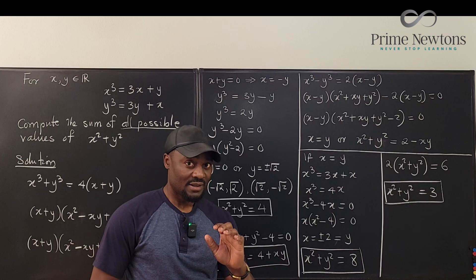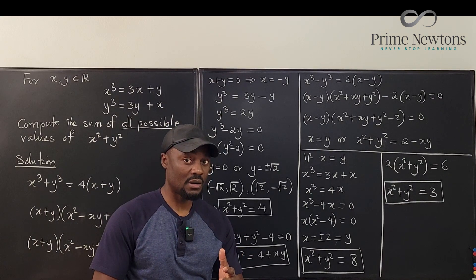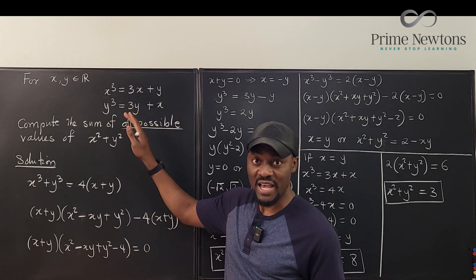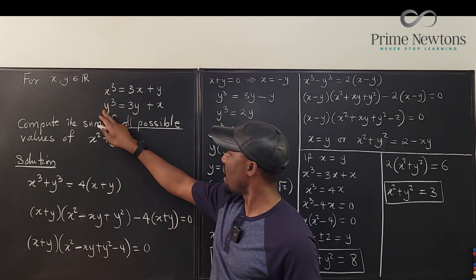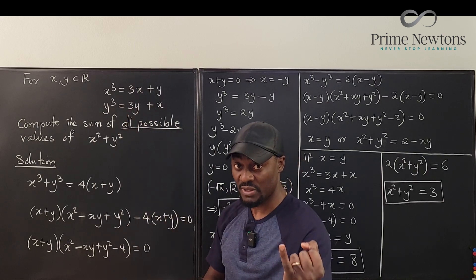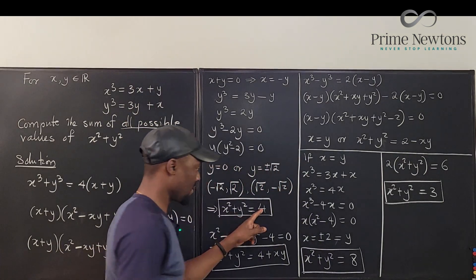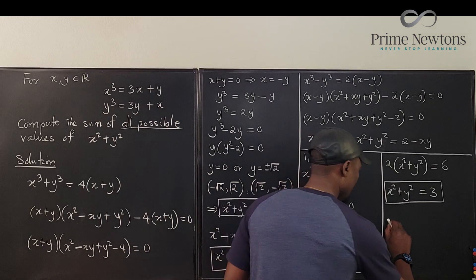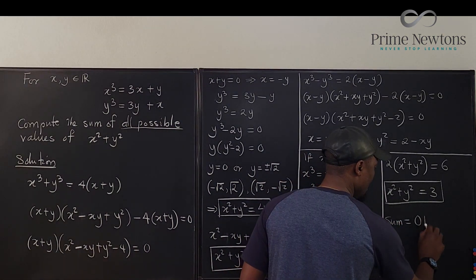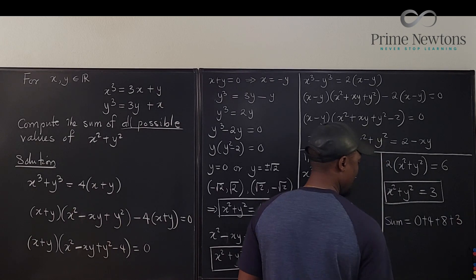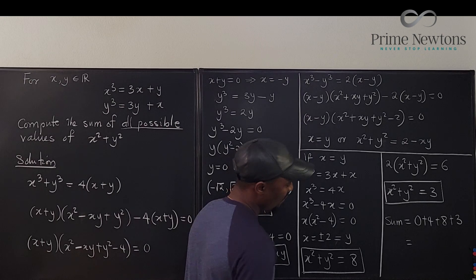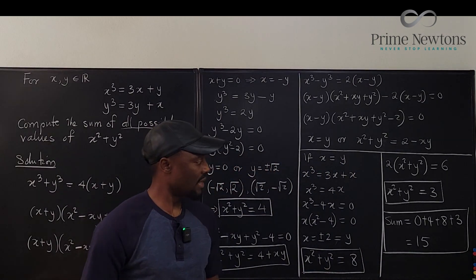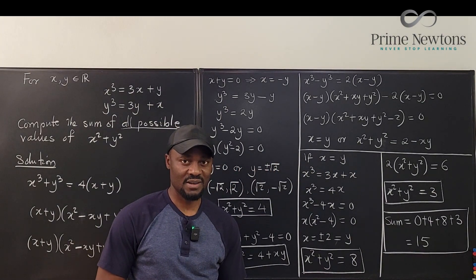So the possible values of x² + y² are: 0 (trivial), 4, 8, and 3. The sum of all possible values is 0 + 4 + 8 + 3 = 15. And that's the answer we've been looking for. Never stop learning — those who stop learning, stop living.